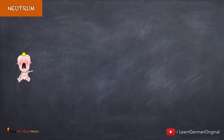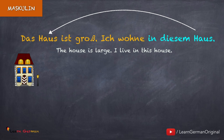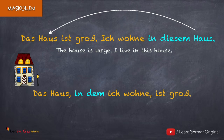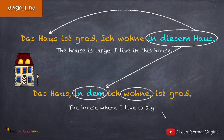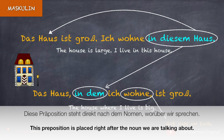Und jetzt ein Beispiel mit einer Präposition. Das Haus ist groß. Ich wohne in diesem Haus. Das präpositionale Objekt heißt 'in diesem Haus'. In dem Relativsatz ersetzt man 'diesem Haus' mit dem Dativ-Relativpronomen dem: Das Haus, in dem ich wohne, ist groß. Das Verb steht am Ende. Die Präposition geht in den Relativsatz mit — das soll man nicht vergessen. Diese Präposition steht direkt nach dem Nomen, worüber wir sprechen.